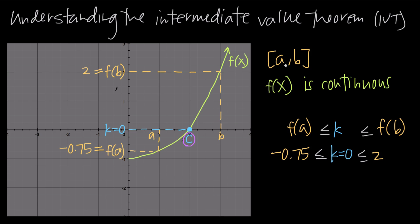So the conclusion is: if I have a closed interval a to b, and f of x is continuous on that interval, and I can show that f of a is negative and f of b is positive, then the Intermediate Value Theorem guarantees there is some value c between a and b where the function equals 0 — meaning the function crosses the x-axis and therefore has a solution or root at that point.